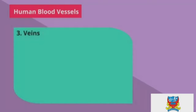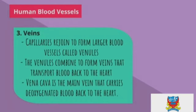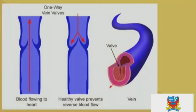The third type of human blood vessel is the vein. Capillaries rejoin to form larger blood vessels called venules, which combine to form veins that transport blood back to the heart.